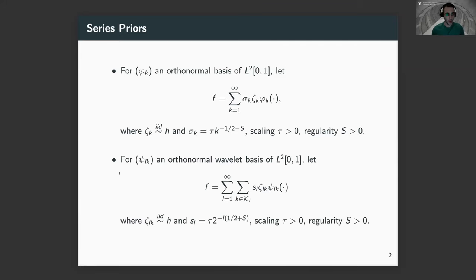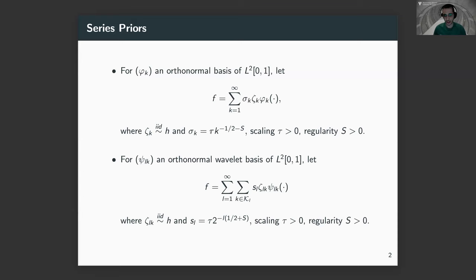We are interested in inference on functional unknowns. For simplicity, let's consider unknowns on the unit interval. A natural thing to do is to consider series priors. We will consider two settings: one type of prior expressed through a single-index orthonormal basis in L2, and another using a double-index wavelet orthonormal basis in L2.